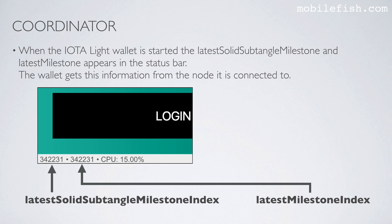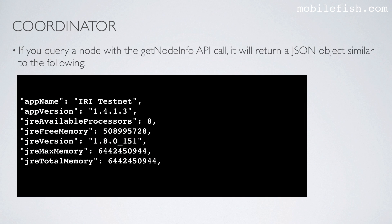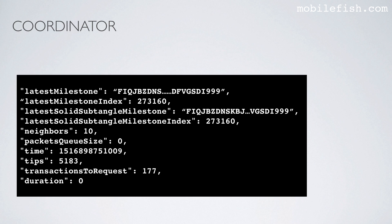When the IOTA Lite wallet is started, the latest solid subtangle milestone and the latest milestone appear in the status bar — in the bottom left corner you will see these two numbers. The first number is the latest solid subtangle milestone index, and the second number is the latest milestone index. The wallet gets this information from the node it is connected to. If you query a node with the GetNodeInfo API call, it will return a JSON object containing the latest milestone, the latest milestone index, the latest solid subtangle milestone, and the latest solid subtangle milestone index.